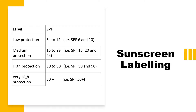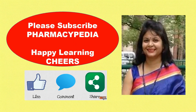This table shows SPF ranges: SPF 6–14 gives low protection, SPF 15–29 gives medium protection, SPF 30–50 gives high protection, and SPF 50+ gives very high protection — though compared to SPF 30, the extra protection is only 1–2%. The ideal sunscreen choice is SPF 30 with 4 to 5 star UVA protection for combined broad-spectrum coverage. In the next video, sunscreen agents across UVB and UVA ranges and their combinations will be discussed. Always use SPF 30 for UVB protection along with 4 to 5 star UVA protection.